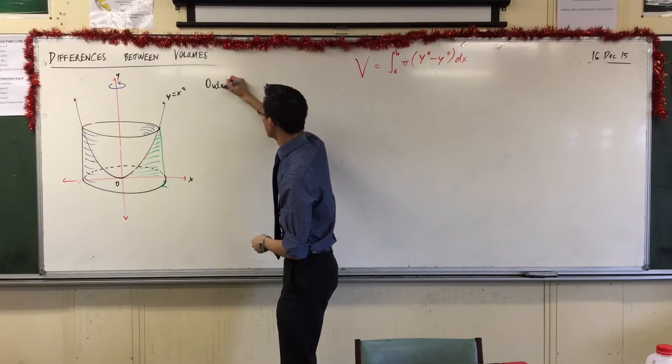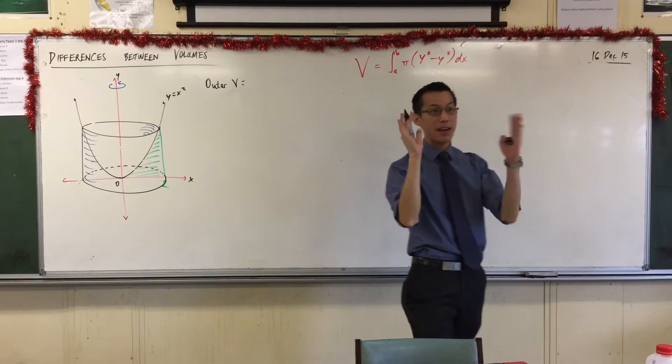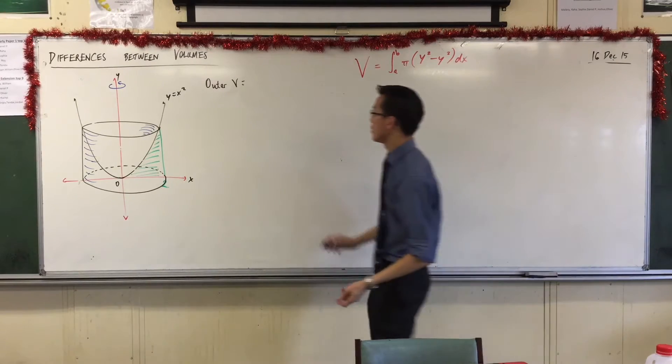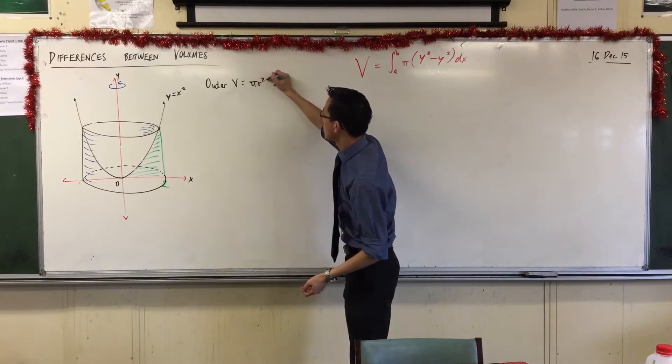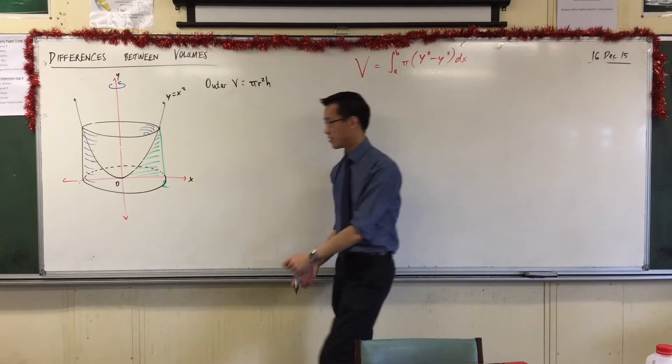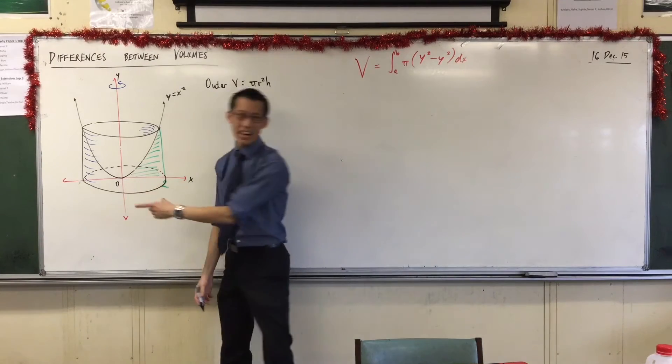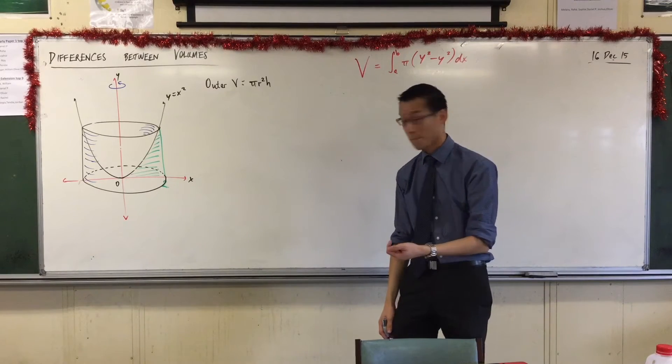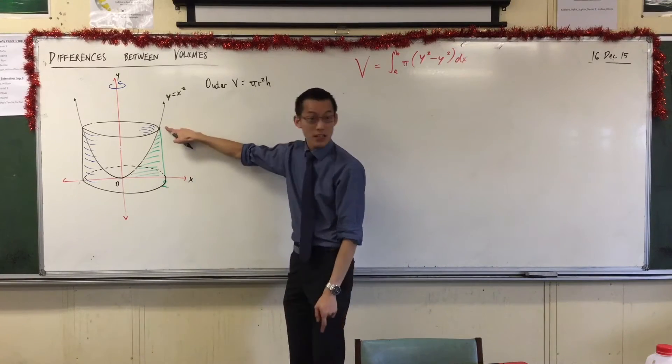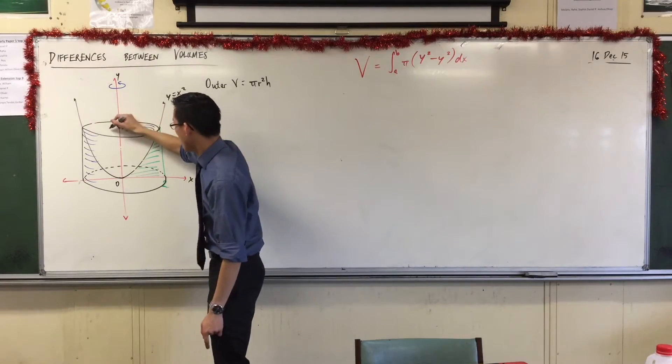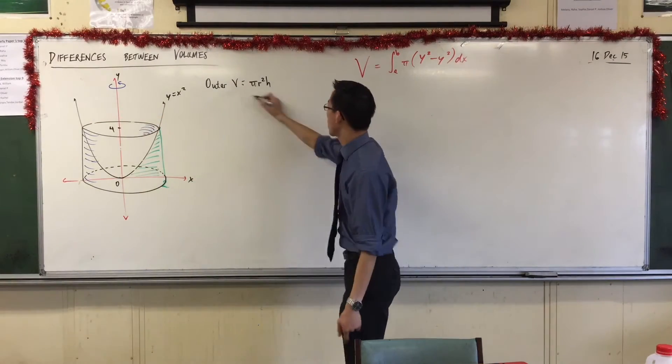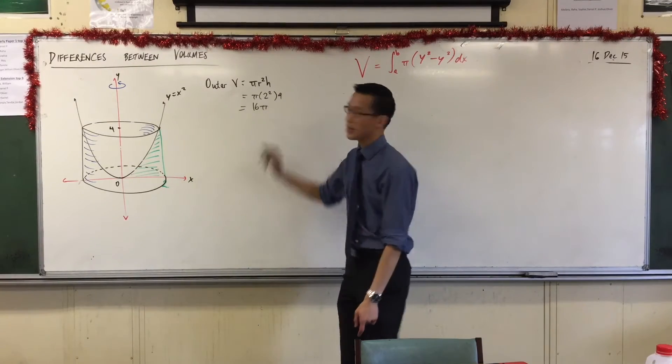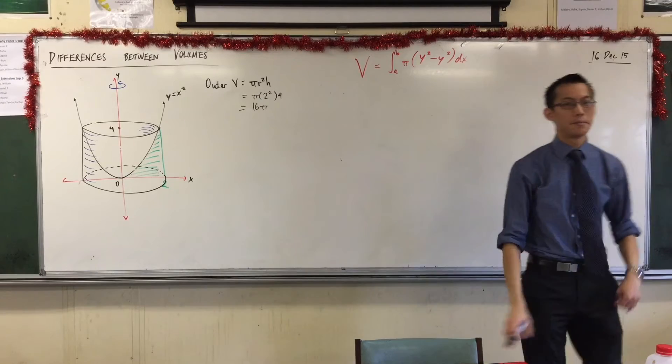Now this outer volume is nice and easy. Because I've got some straight edges here, the outer volume is just a cylinder. So pi r squared h, I know what the radius of this cylinder is, because I've got 0 to 2 here. I don't yet know what the height is. What is the height? It's going to be 4, because when you put an x equals 2 here to get this part, you get 2 squared, which is 4. So I've got pi times 2 squared times 4. That gives me 16 pi. Outside bit, done.